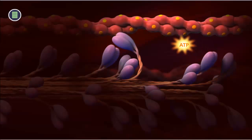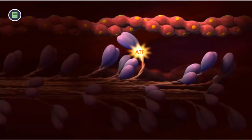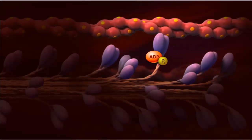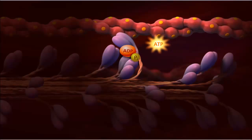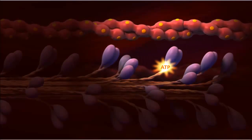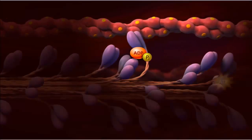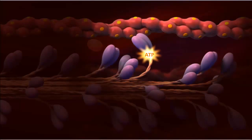The myosin remains attached to actin until a new molecule of ATP binds, freeing the myosin to either go through another cycle of binding and more contraction, or remain unattached to allow the muscle to relax.